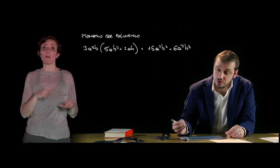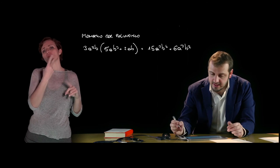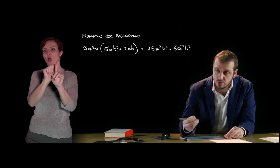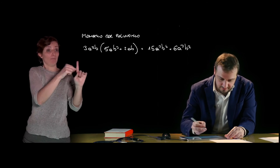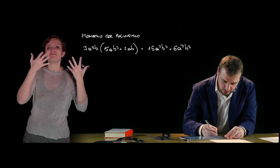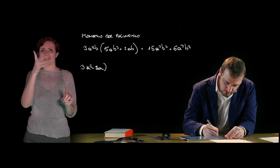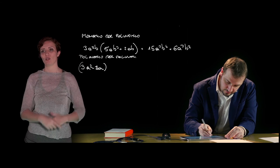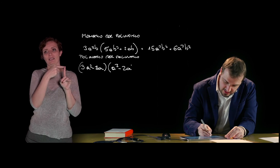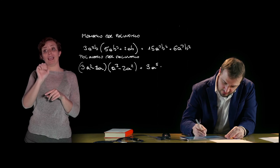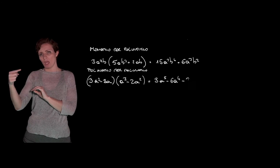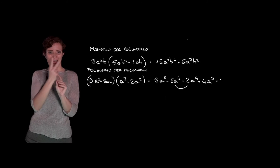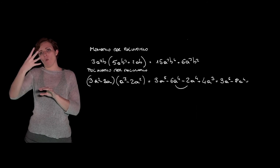Infine, la moltiplicazione di due polinomi si ottiene moltiplicando ogni termine del primo polinomio per ciascun termine del secondo polinomio e andando poi ad addizionare tutti i prodotti ottenuti, eventualmente semplificandoli qualora siano presenti dei monomi simili. Ad esempio: a alla terza per il polinomio, meno 2a alla seconda, porta a 3a alla quinta meno 6a alla quarta meno 2a alla quarta più 4a alla terza; semplificando i monomi simili otteniamo 3a alla quinta meno 8a alla quarta più 4a alla terza.